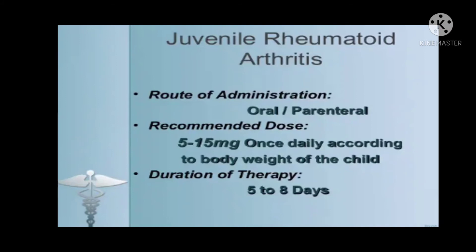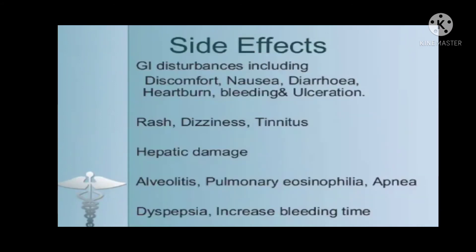The side effects of piroxicam — since it belongs to the NSAID class — include the common adverse effects of NSAIDs: GI disturbance including discomfort, nausea, diarrhea, heartburn, bleeding and ulceration. It also has chances of hepatic damage, rashes, dizziness, tinnitus (ringing in the ears), different types of inflammation, dyspepsia, and increased bleeding time. Why does it increase bleeding time? Let me know the answer in the comment box.